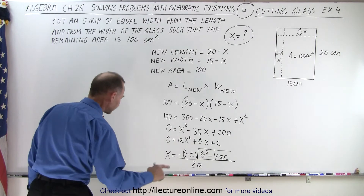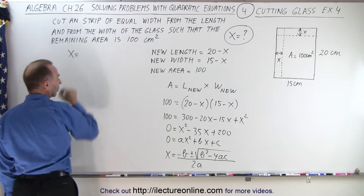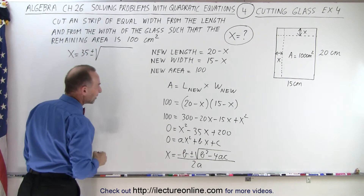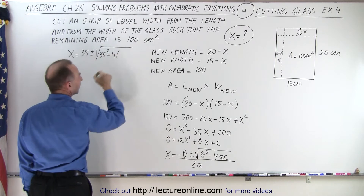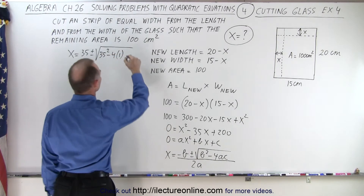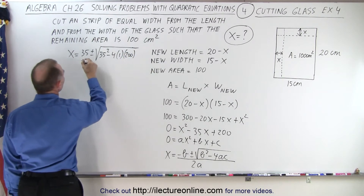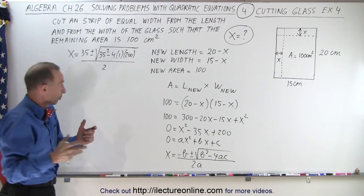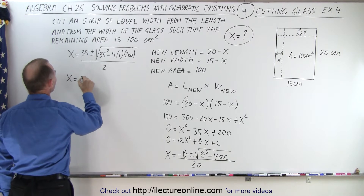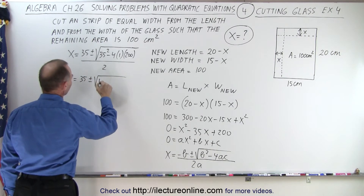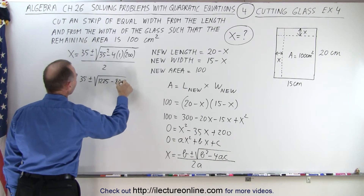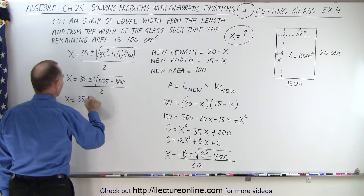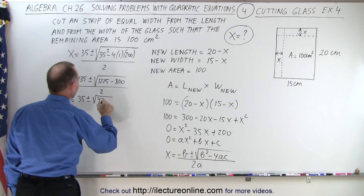Let's see if we have a realistic answer. Plugging in the numbers: x equals minus b — b is negative 35, so that becomes positive 35 — plus or minus the square root of b squared, which is 35 squared, minus 4 times a times c, which is 200, all divided by 2a, which is 2. We work this out: 35 squared is 1225, minus 800, all divided by 2. This is a positive number, so we get a real answer.